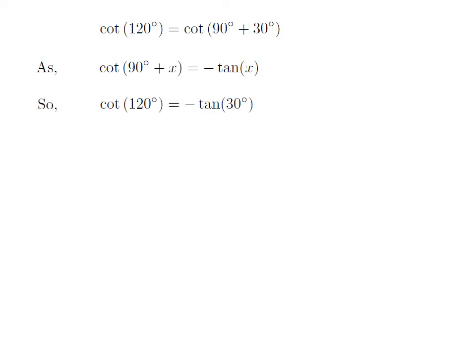Let us apply the above identity for cotangent of 120 degree. Here, x is 30 degree, so cotangent of 120 degree is equal to minus tangent of 30 degree.